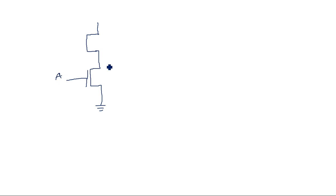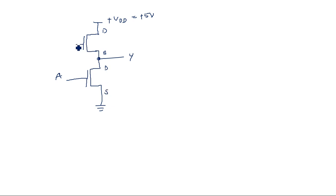The NMOS inverter has two transistors. We apply input A at the gate of the pull-down transistor, and the output Y is taken from the node between the two transistors, with VDD at plus 5 volts. The pull-up transistor Q1 has its gate connected to drain, and source and substrate connected together. The pull-down transistor Q2 is an NMOS transistor receiving the input. This is the logic realization of the NMOS FET inverter.